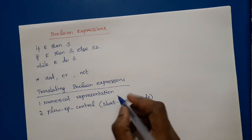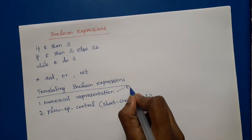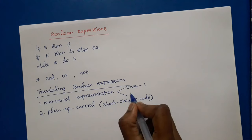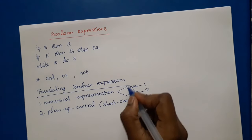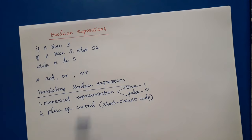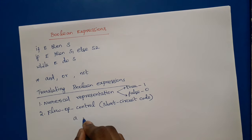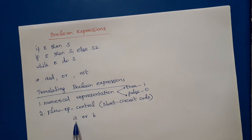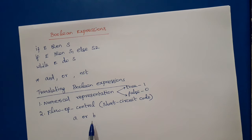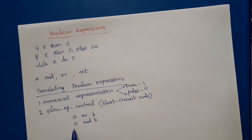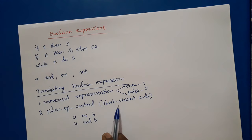In numerical representation, true is considered as 1 and false represents 0. In the flow of control or short-circuit method, suppose you want to evaluate A OR B — if A is true, the entire expression is true and there is no need to evaluate B. Similarly in AND, if A is false the entire expression is false, but if A is true we need to evaluate B. This is called short-circuit code, and we will discuss it in the next videos.